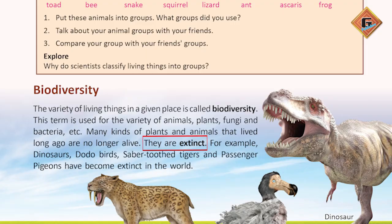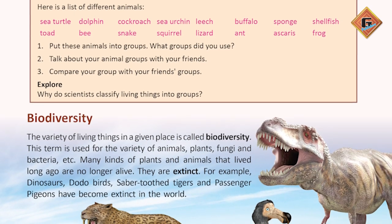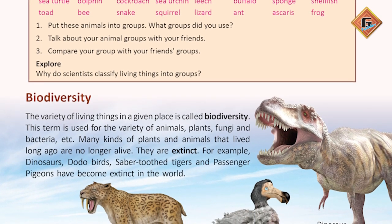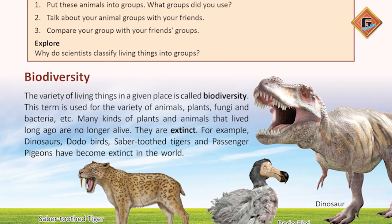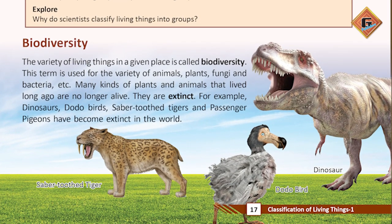So we call them extinct. Those living organisms that no longer exist in this world but were here before, we call them extinct. Extinct means no longer present. On book page number 17, we have seen extinct animals, which include the dodo bird, the saber-tooth tiger, and other such species that are extinct.